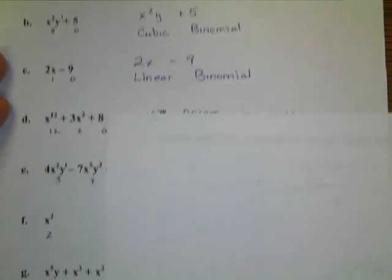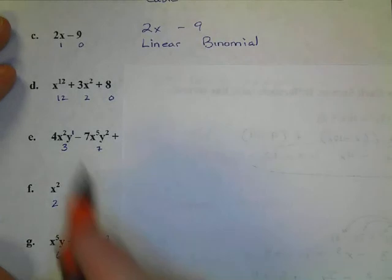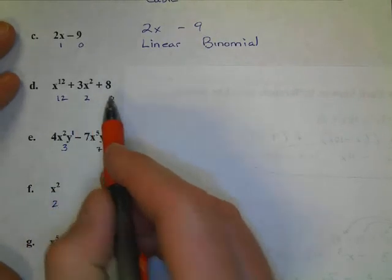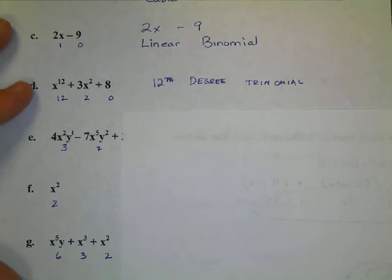We look at our next one. We have x to the 12th. Obviously, the degree there is 12. Degree is 2. Degree is 0. So, it's a 12th degree trinomial. It's already written in the correct order. And there's nothing more to be said. Trinomial because it's three terms.